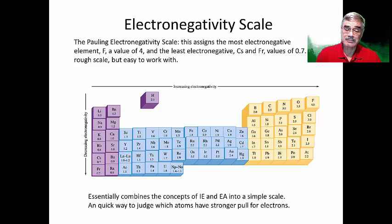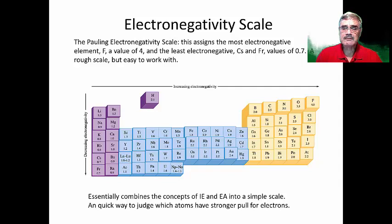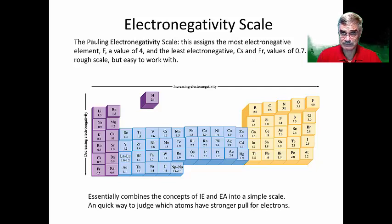At the bottom left, the element with the lowest value is francium at 0.7. The electronegativity value increases from the bottom left to the upper right. In the upper right part of the periodic table — which contains many elements we deal with most often in drawing Lewis dot structures — the electronegativity drops in half steps going left: fluorine is 4, oxygen is 3.5, nitrogen is 3, carbon is 2.5, boron is 2, beryllium is 1.5, and lithium is 1.